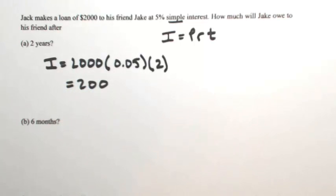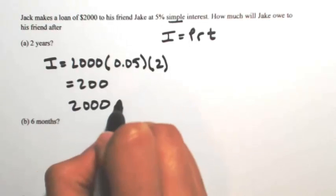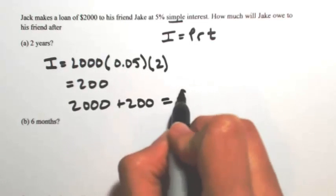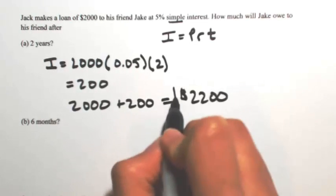But he still owes his friend the money that his friend loaned him. So altogether, he's going to owe the $2,000 on top of the $200, so he's going to owe $2,200 to his friend.